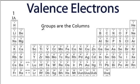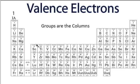Remember, groups go up and down. They are the columns on the periodic table, so groups go up and down. In group 1, or sometimes called 1A, all of these elements have 1 valence electron.